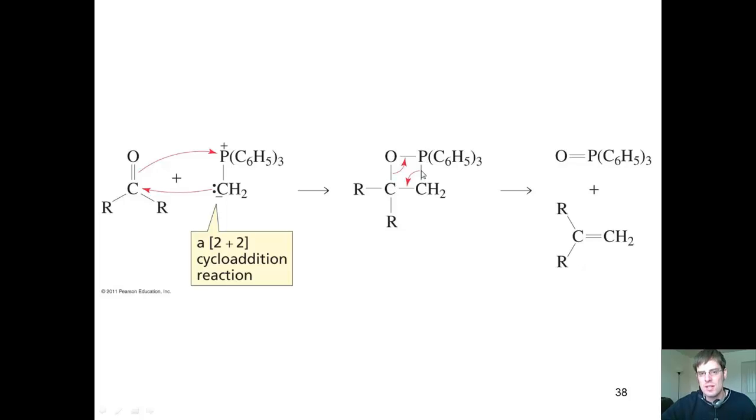These electrons then rearrange. These two electrons flip down like a trapdoor, and these two electrons flip up like a trapdoor, releasing my phosphorus-oxygen double bond and my carbon-carbon double bond as shown here.